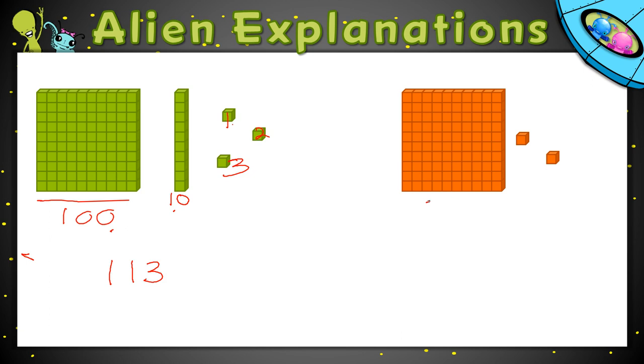In this last example, I just have 1 of our 100s, and then I have 1, 2 of our cubes. So, that's 102.